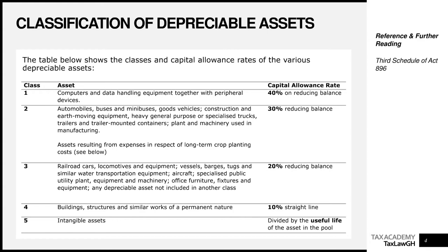Class four is easy to remember: buildings, structures and similar works of a permanent nature. Class five is for all intangible assets — software, copyrights, patents. To remember the rates: class one through four goes 40, 30, 20, 10. Classes one, two, and three use reducing balance; classes four and five use straight line. The rates descend as 40% reducing balance, 30% reducing balance, 20% reducing balance, 10% straight line, then useful life for class five.